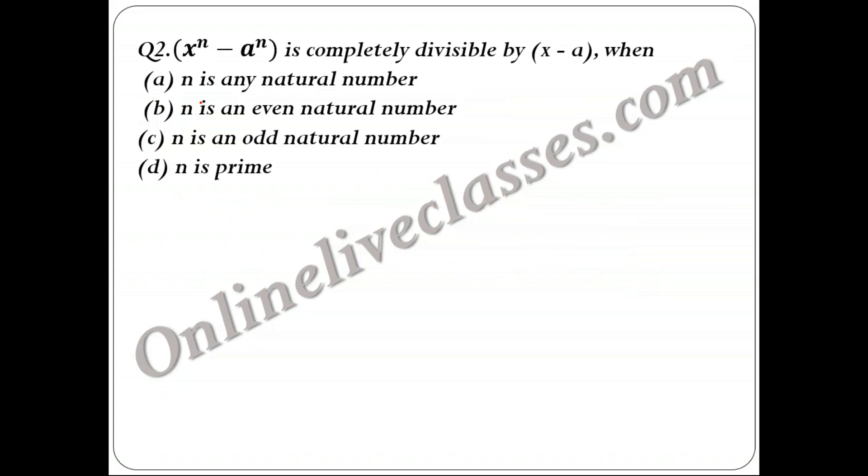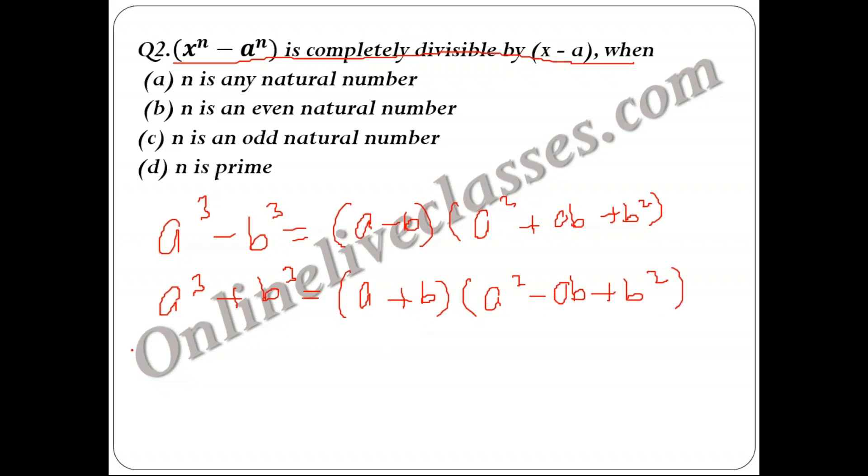Now the next question says that x^n - a^n is divisible by x - a. I have discussed this property in the number system lecture where I was talking about remainders. So I know that a³ - b³ is given by (a - b)(a² + ab + b²), and a³ + b³ is given by (a + b)(a² - ab + b²), and a² - b² is given by the formula (a - b)(a + b).